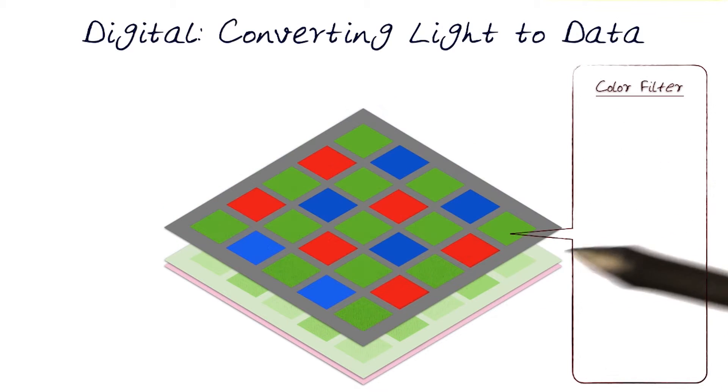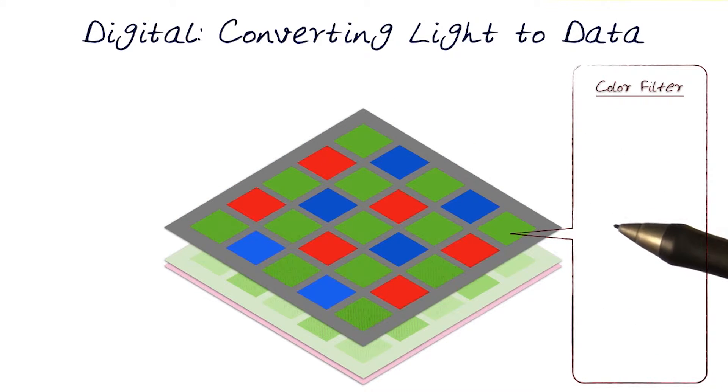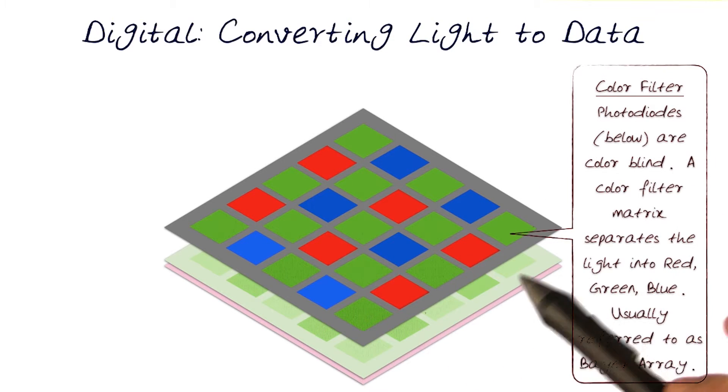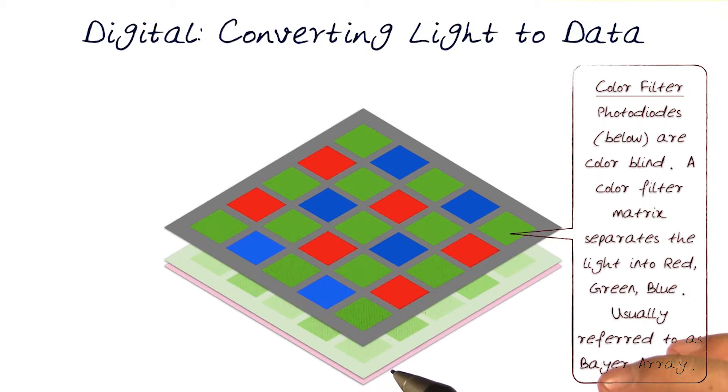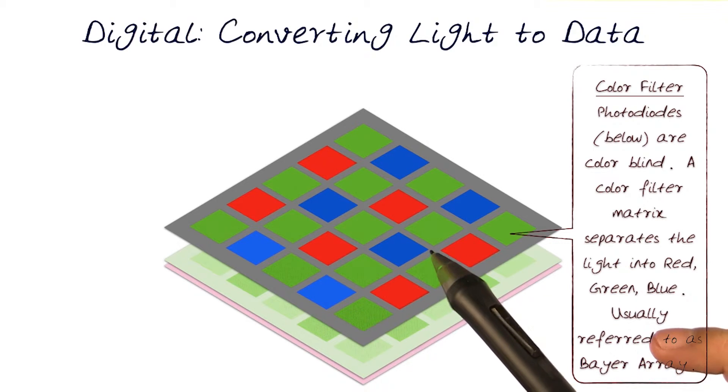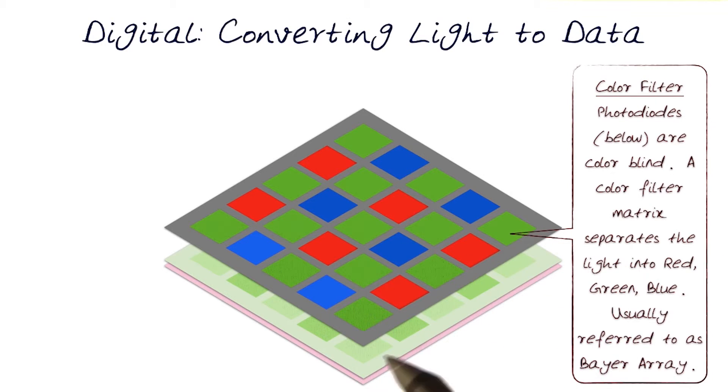This is what's referred to as a color filter. Remember, light has lots of constituent colors. Most of the time we try to represent them or at least capture them in RGB format. And that's what we're going to try to understand how to do here. In essence, the photodiodes that are below it are actually color-blind. They want to capture the intensity. So this is where we start separating out the colors. This is usually referred to as a Bayer array, and we'll talk about Bayer arrays in a bit.